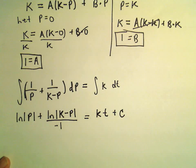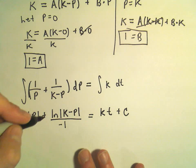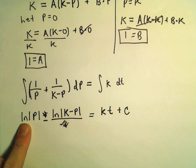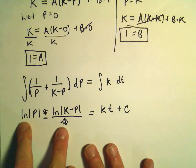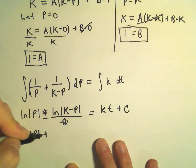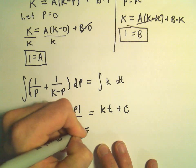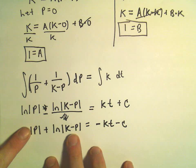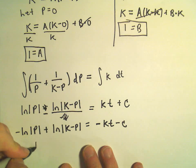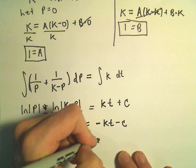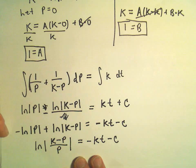You can think about the negative as being out front, so now we have logarithms being subtracted. I'm going to multiply both sides by negative 1, which puts things in a slightly better form. That gives me negative kt minus C on the right side. On the left side, we have ln of K minus p minus ln of p. Writing that as division gives ln of K minus p over p, equal to negative kt minus C.